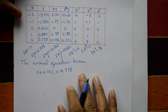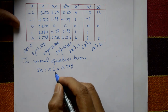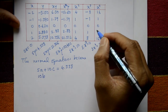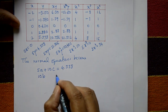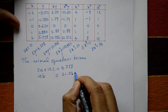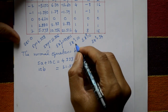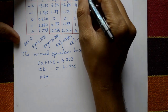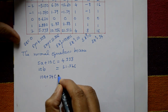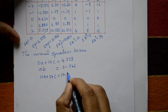The second normal equation becomes: since Σx = 0 and Σx³ = 0, we get 10b = 21.326. The third equation is: 10a + 0·b + 34c = 10.402, since Σx² = 10, Σx³ = 0, and Σx⁴ = 34.